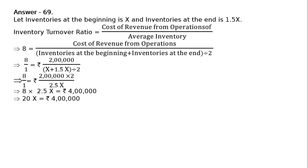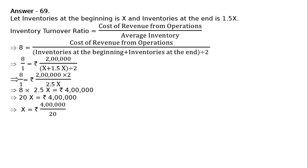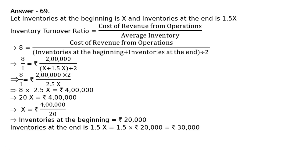That gives us 20x equals Rs. 4 lakh. Therefore, x equals Rs. 4 lakh divided by 20, which equals Rs. 20,000. So x, which is inventories at the beginning — that is, opening stock — equals Rs. 20,000. Inventories at the end is 1.5x, which equals 1.5 multiplied by Rs. 20,000, giving Rs. 30,000.